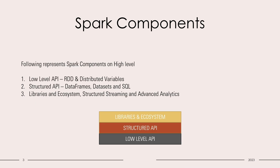What are the important Spark components? I'll just tell you what is important — these are the Spark components on a high level structure. Spark consists of three components: low-level API, structured API, and libraries and ecosystem. The low-level API is the bottom structure, and the structured API is built upon low-level APIs. Low-level APIs generally consist of RDD — Resilient Distributed Data — and distributed variables.